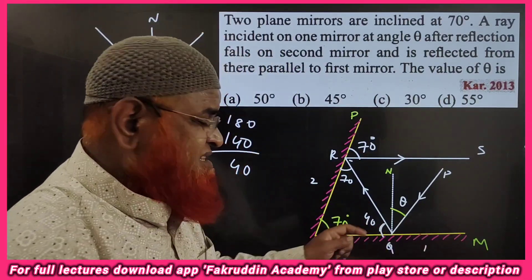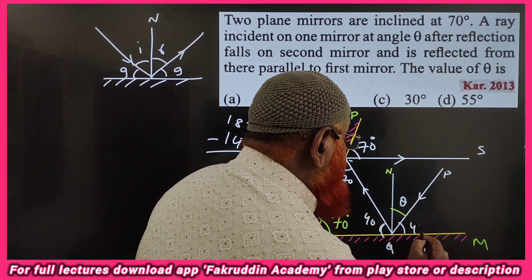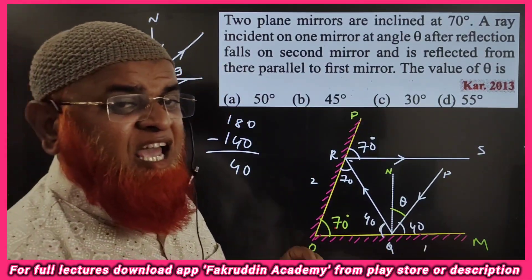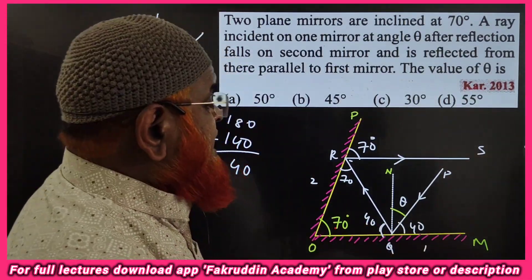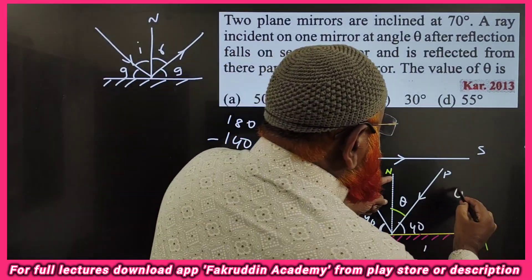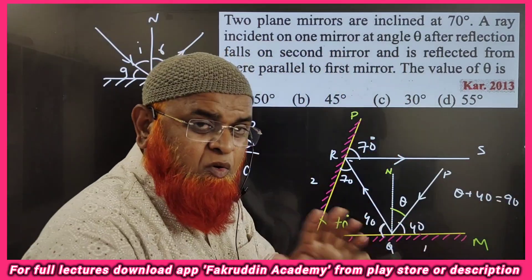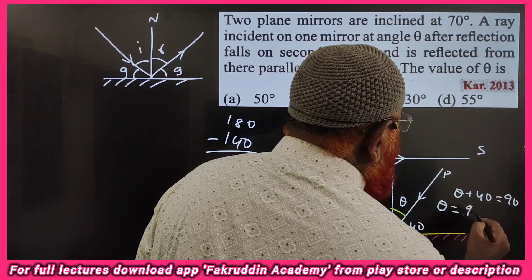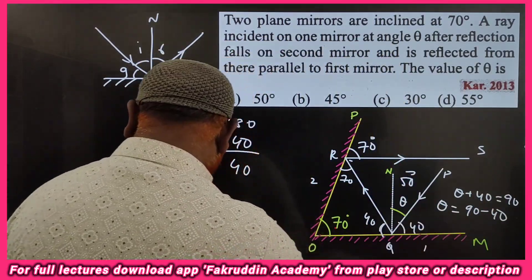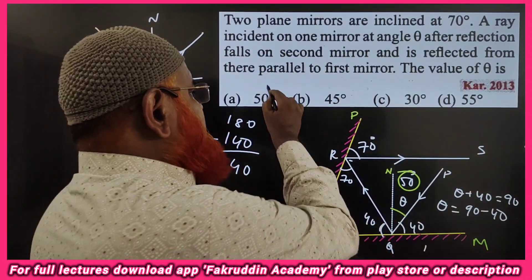We got the third angle as 40 degrees. Because of the glancing angle property, the corresponding glancing angle at the first mirror is also 40 degrees. Since the normal is perpendicular to the mirror, theta plus 40 must equal 90 degrees. Therefore, theta equals 90 minus 40, which gives theta equals 50 degrees.